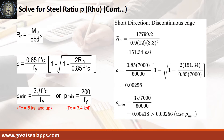Short direction discontinuous edge moment equals 17,799.2 inch-pounds. Resistance factor equals 0.9, b equals 12 inches, and d equals 3.3 inches. The beam design ratio R_N equals 151.34 PSI, and reinforcement ratio rho equals 0.00256. Use rho minimum of 0.00418.